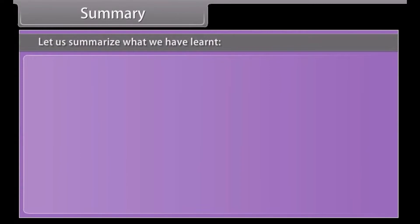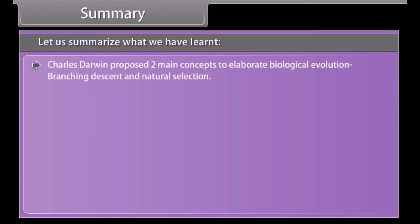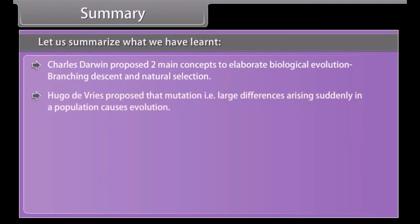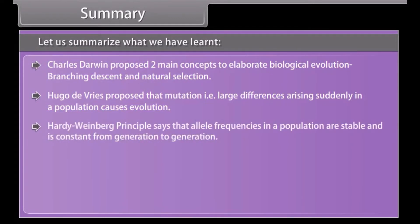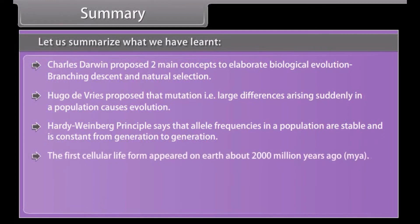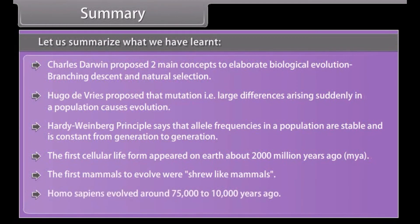In summary: Charles Darwin proposed two main concepts of biological evolution — branching descent and natural selection. Hugo de Vries proposed that mutation, i.e. large differences arising suddenly in a population, causes evolution. The Hardy-Weinberg Principle says that allele frequencies in a population are stable and constant from generation to generation. The first cellular life form appeared on earth about 2,000 million years ago, and the first mammals to evolve were shrew-like mammals. Homo sapiens evolved around 75,000 to 10,000 years ago.